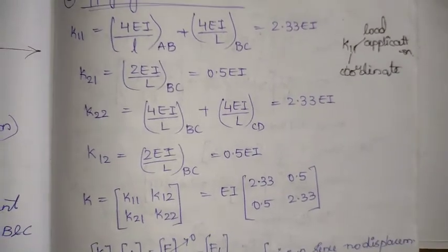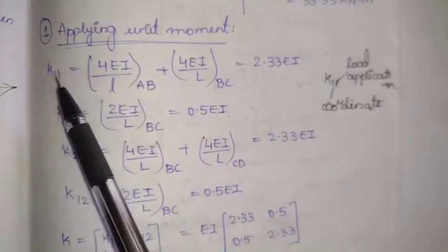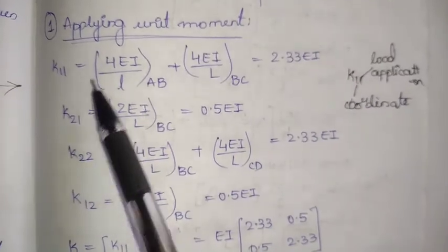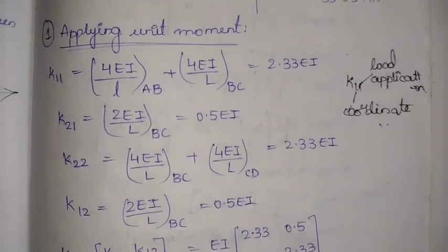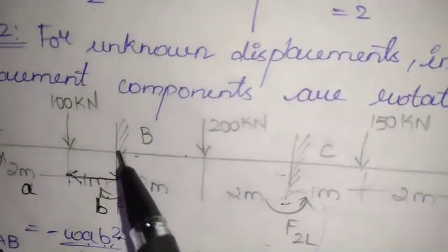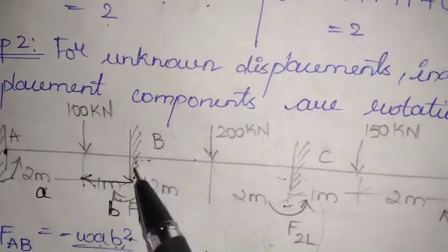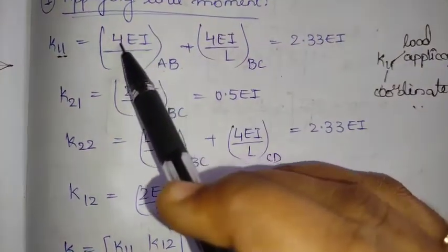Since the degree of kinematic indeterminacy is two, the stiffness matrix is of order 2×2. For K11, the load is applied and measured at coordinate 1 (joint B), which lies between spans AB and BC, so we consider both spans. When the coordinate of load application and measurement are the same, K11 equals 4EI/L for each contributing span, summed together.